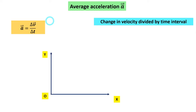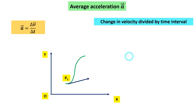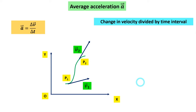Consider the X-Y plane with O as the origin. The path of the particle is shown. At point P1, the velocity is V1, which is tangent to the path. At point P2, the velocity is V2, at a different angle. We draw both vectors V1 and V2 to show their magnitudes and directions in the motion plane.